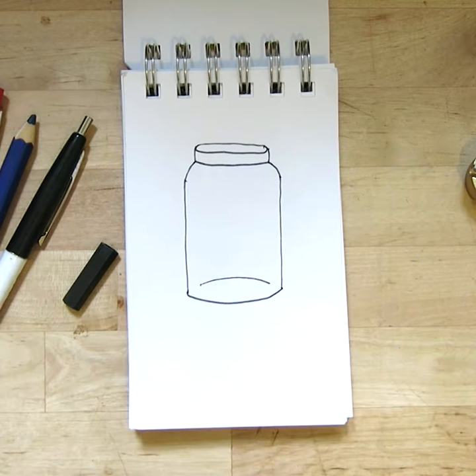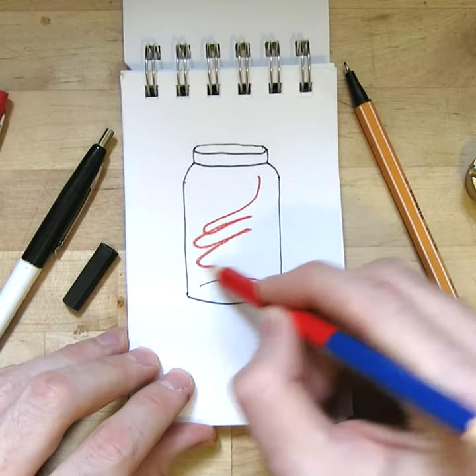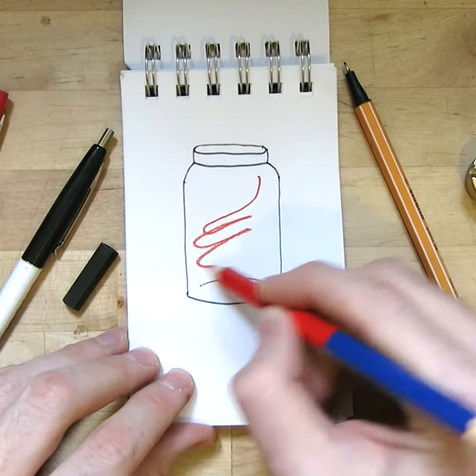So I'm going to use my red pencil to fill the jar with blood. What is that blood from? I have no idea. It could be any kind of blood you like. And that's it. A jar of blood.